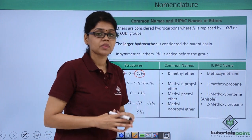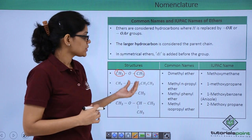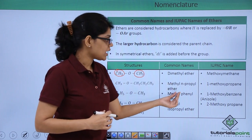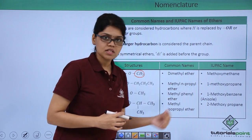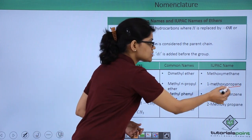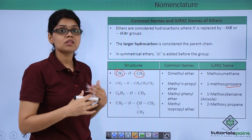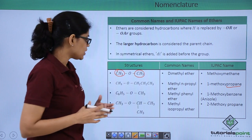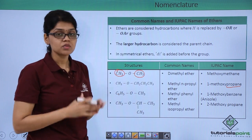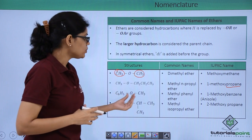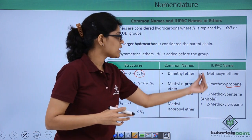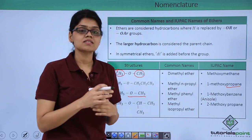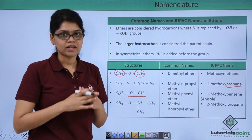For an unsymmetrical ether, the common name is methyl-n-propyl ether and the IUPAC name is 1-methoxypropane, because propane is the larger hydrocarbon and becomes the parent chain with a 1-methoxy substituent. For C6H5-O-CH3, the common name is methyl phenyl ether and the IUPAC name is 1-methoxybenzene, because benzene is the larger hydrocarbon and becomes the parent chain.